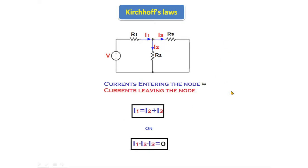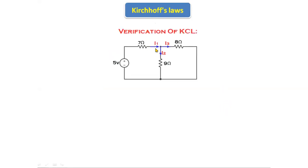Now we will take one small problem to verify whether KCL holds for a particular circuit. In this circuit there are three resistors — 7 ohms, 9 ohms, and 8 ohms — and one voltage source of 5 volts. Assume that I1 current is entering and I2 and I3 currents are leaving.